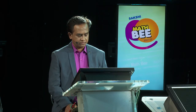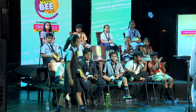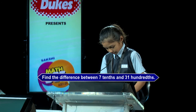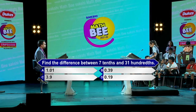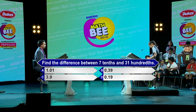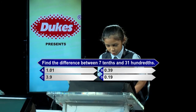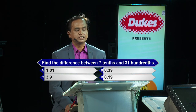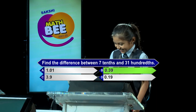Can I call Kangsha from Kennedy High, the Global School, Hyderabad. Find the difference between 7 tenths and 31 hundredths. Options: A-1.01, B-0.39, C-3.9, D-0.19. Contestant answers option B, 0.39. Kindly lock option B, 0.39. And option B is the correct answer. Your smile says it all. Well done.